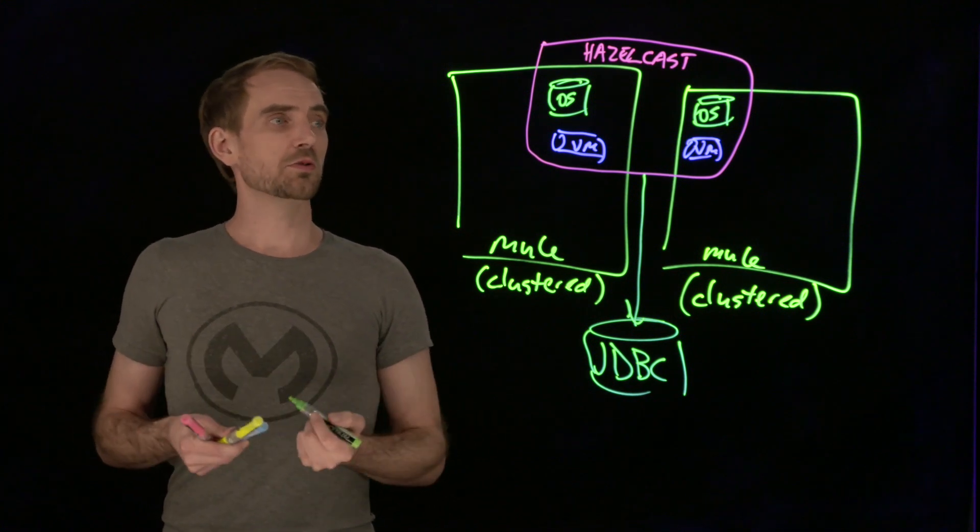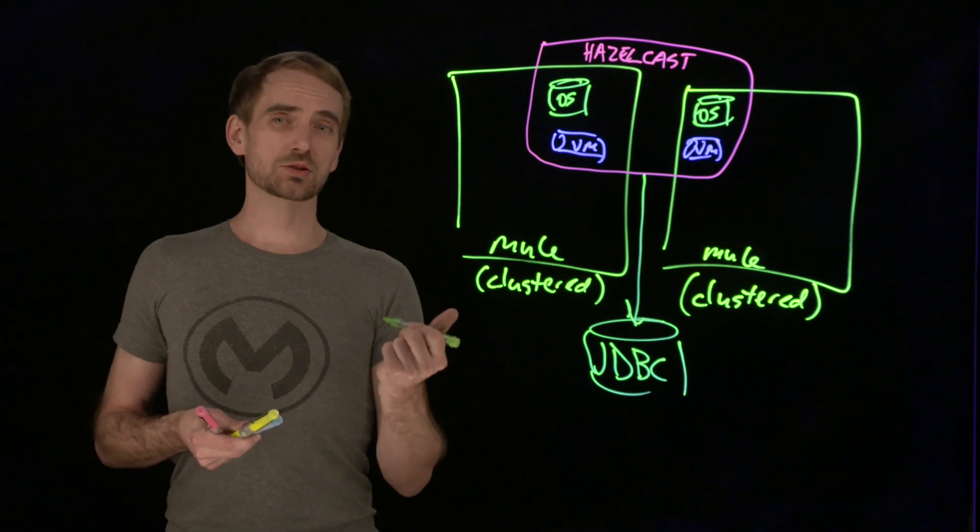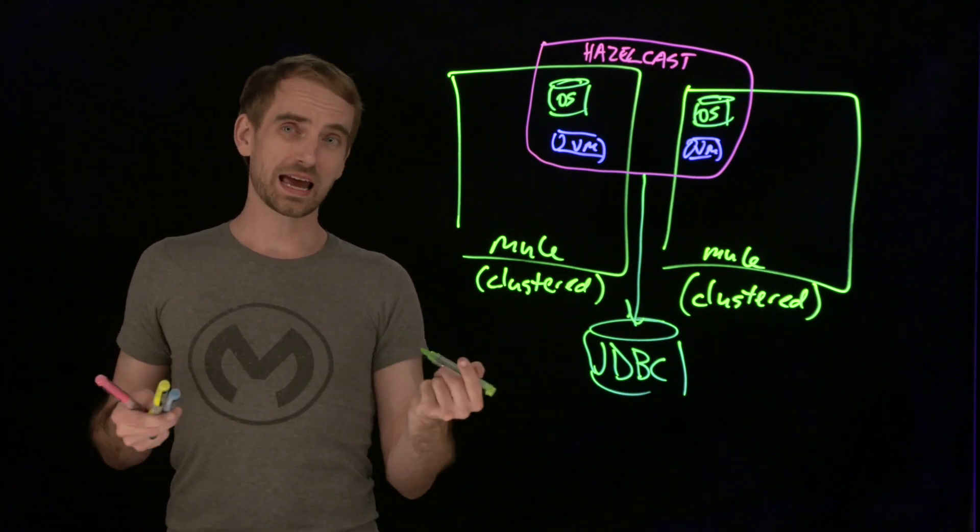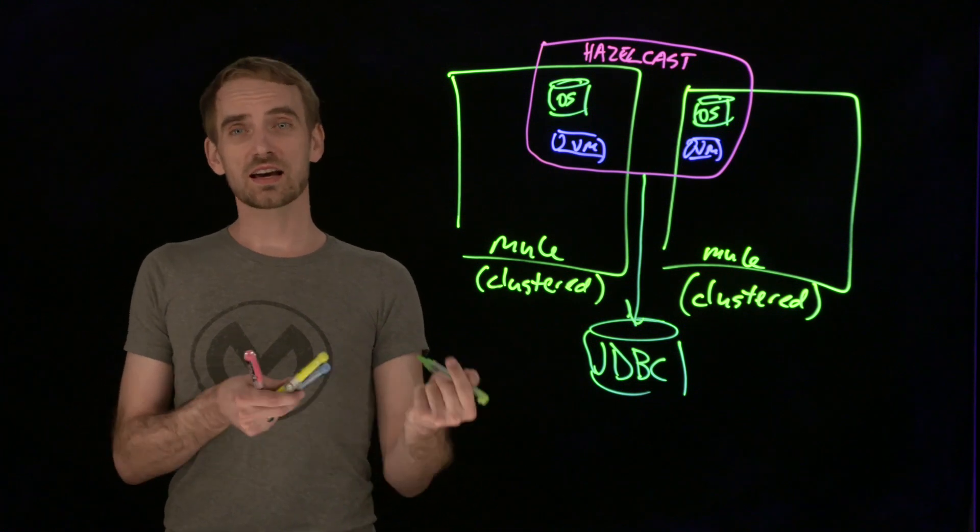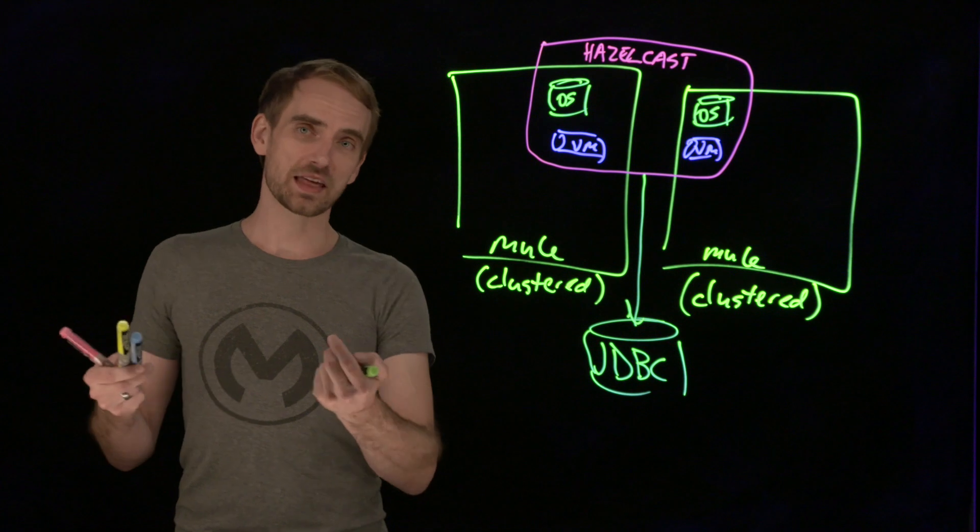That's the option for an on-prem clustered Mule runtime. It uses Hazelcast. You can back it with a database if you want to survive full outages; otherwise, you need the data to remain on at least one node so that when the other nodes come back up, they can get a copy.